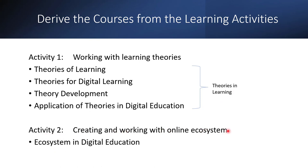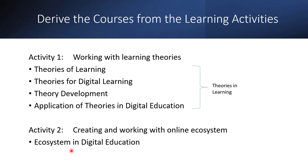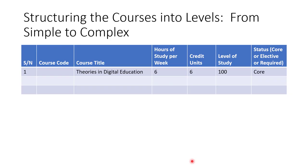If you look at activity two — creating and working with online ecosystems — we cannot break it further, so it stands as a course: 'Ecosystem in Digital Education.' Now, how do you structure these into levels? You structure courses from simple to complex. At first, don't worry about the order — just pull them all down. After that, start ordering: simple courses start at 100 level and move to complex at higher levels.